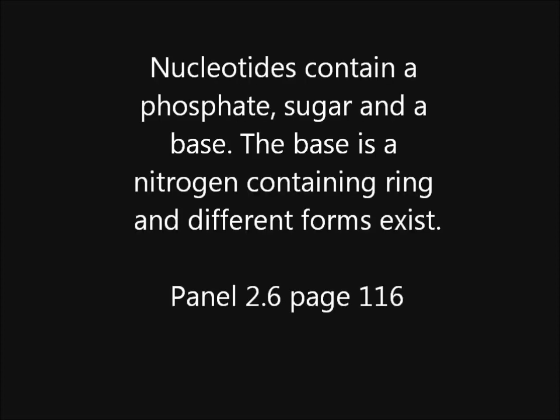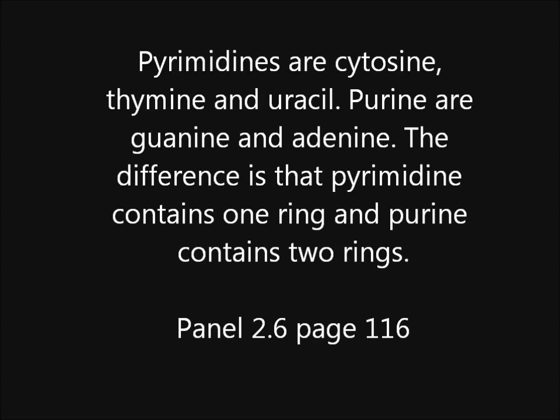Nucleotides contain a phosphate, a sugar and a base. The base is a nitrogen-containing ring and different forms exist. Pyrimidines are cytosine, thymine and uracil. Purines are guanine and adenine. The difference is that pyrimidines contain one ring and purines contain two rings.